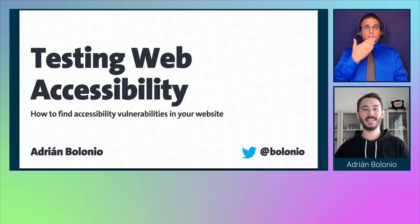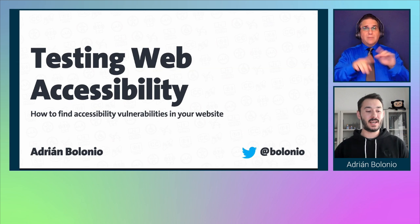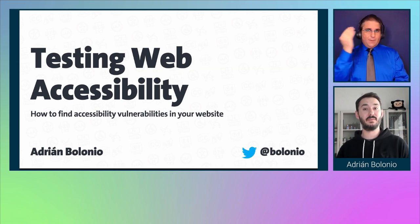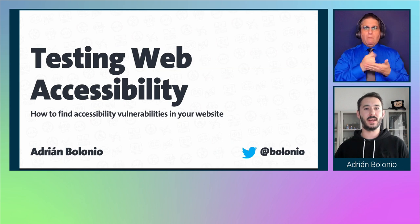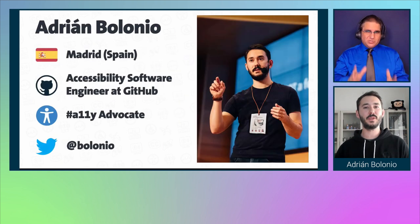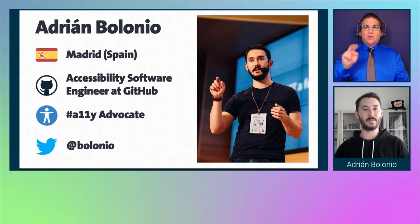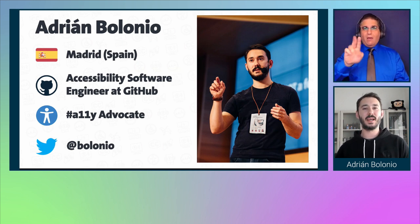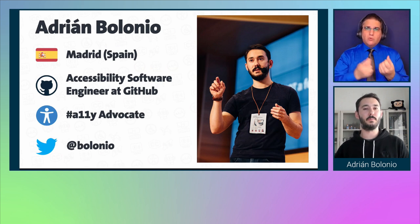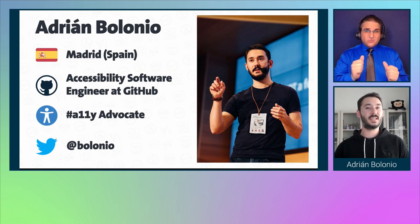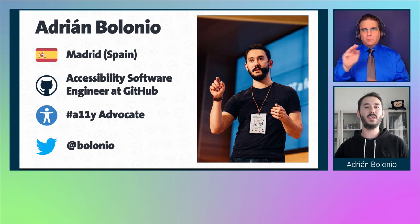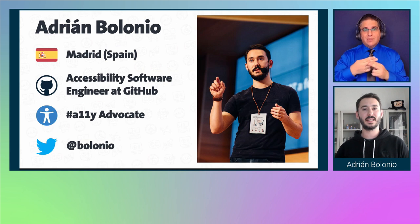Today I'm going to talk about web accessibility testing and share recommendations to have in mind during the testing phase, as well as some tools and processes I find helpful in my daily work as a software engineer. My name is Adrián, I'm from Spain. I work as an accessibility software engineer at GitHub. You can find me on Twitter under my surname — my handle is at Bolonio, B-O-L-O-N-I-O.